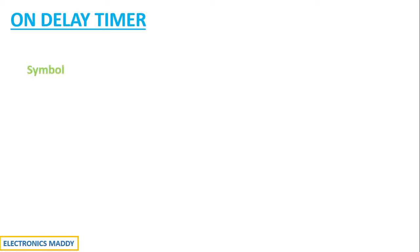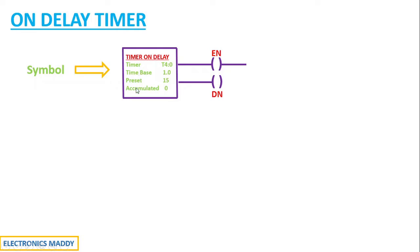At the first place, let us look at the symbol of ON-Delay Timer. This is the symbol of ON-Delay Timer. If you carefully observe, the box has several different parameters such as Timer, Timebase, Reset and Accumulated.